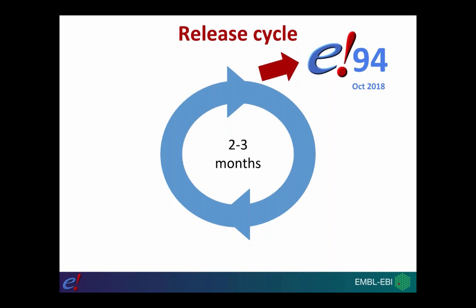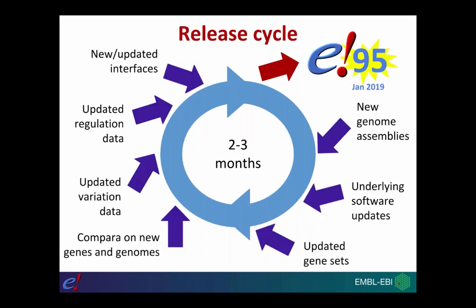One of the important things to remember when using Ensembl is that biological data is not static — all the time new experiments are being published and generating new data. So Ensembl tries to keep up by having periodic releases every two to three months, packaging all the analyses up as a new version. In October 2018 we had Ensembl 94, and at the end of 2018 and beginning of 2019 we looked for new genome assemblies, updated our software, gene sets, and interfaces, and packaged that all up as Ensembl 95, which is why we're here today.